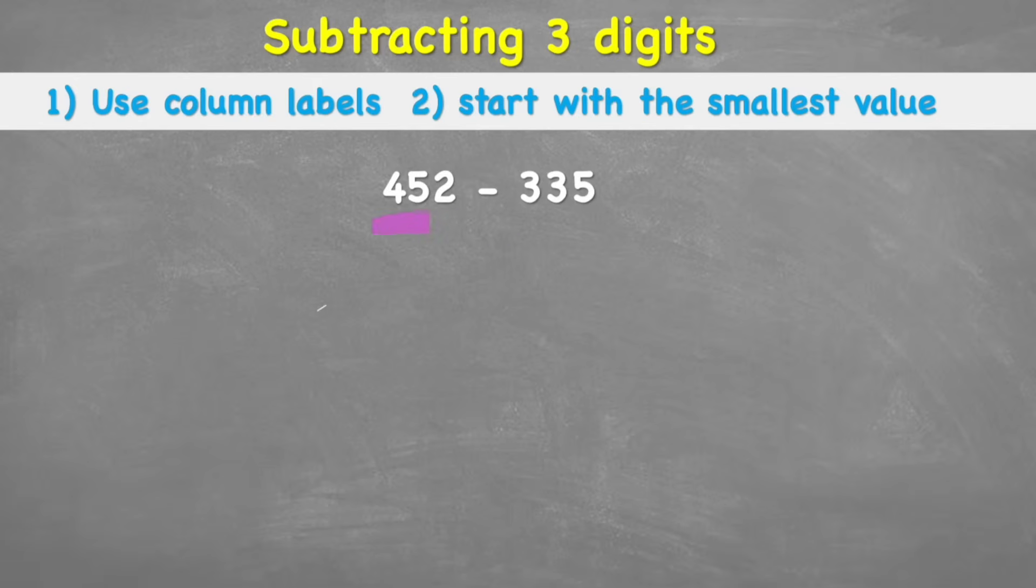Okay, today we're looking at this question here: 452 subtract 335. And we're going to follow these two tips. We're going to use column labels and we're going to start with the smallest value. So let's see what that looks like.